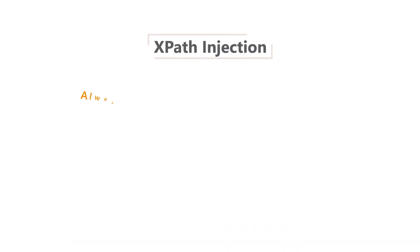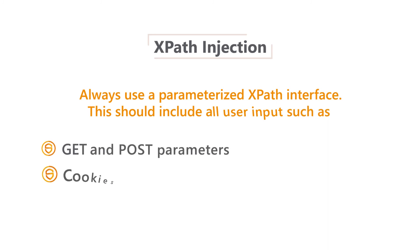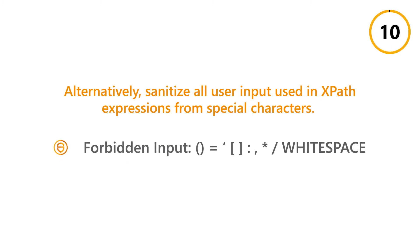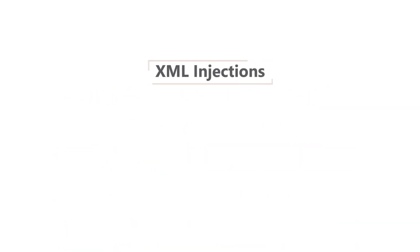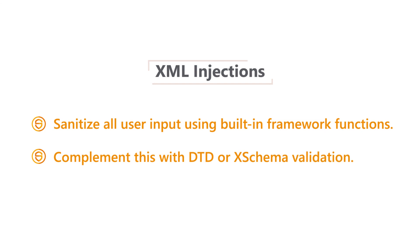To prevent XPath injection, always use a parameterised XPath interface. This should include all user input such as GET and POST parameters, cookies and other HTTP headers. Alternatively, sanitise all user input used in XPath expressions from special characters. Preventing XML injections requires developers to sanitise all user input using built-in framework functions. Also, complement this with DTD or XML schema validation.